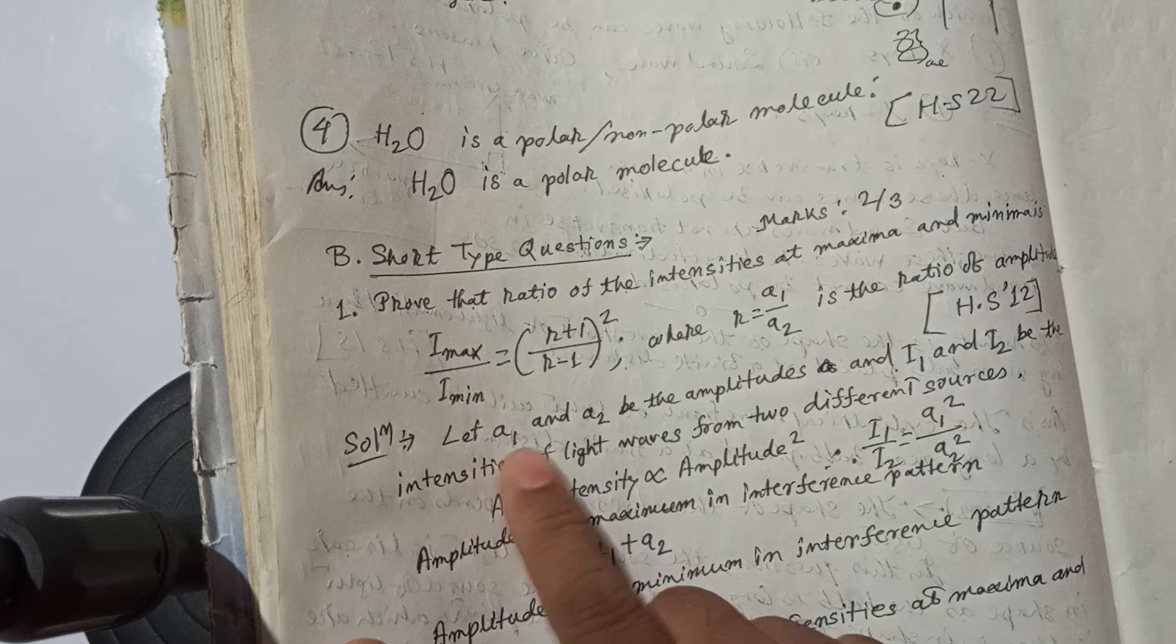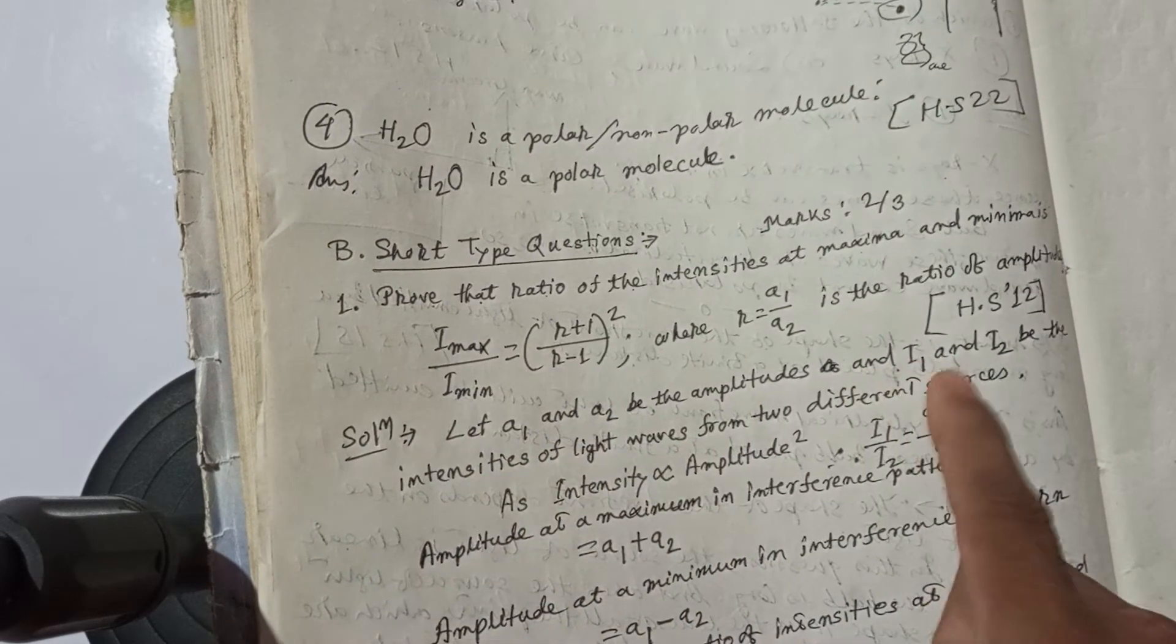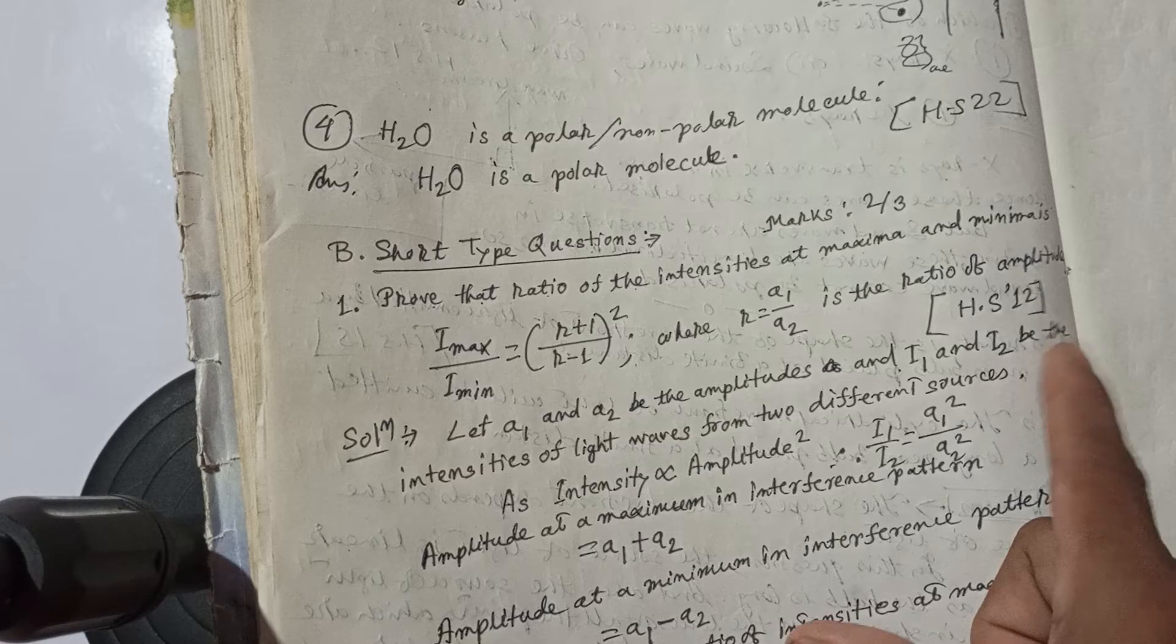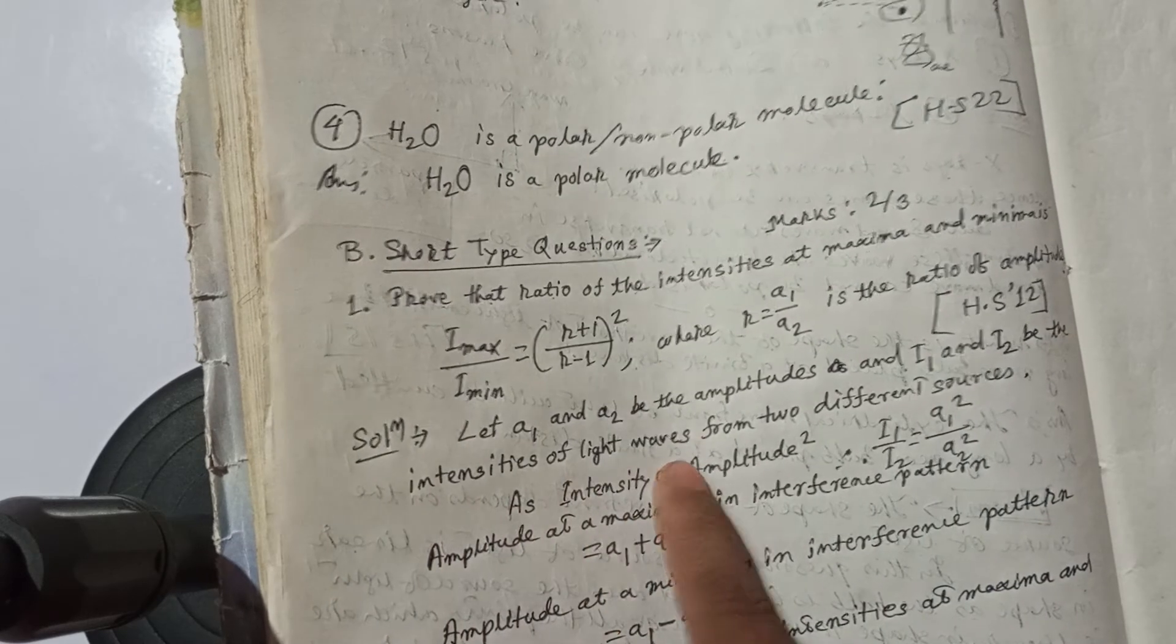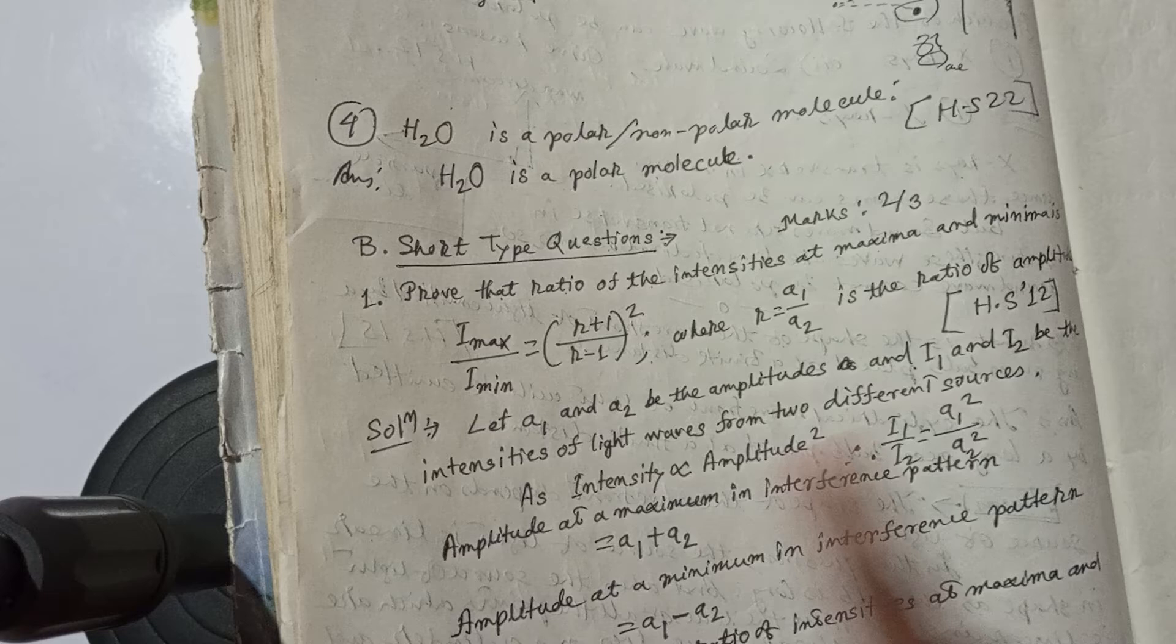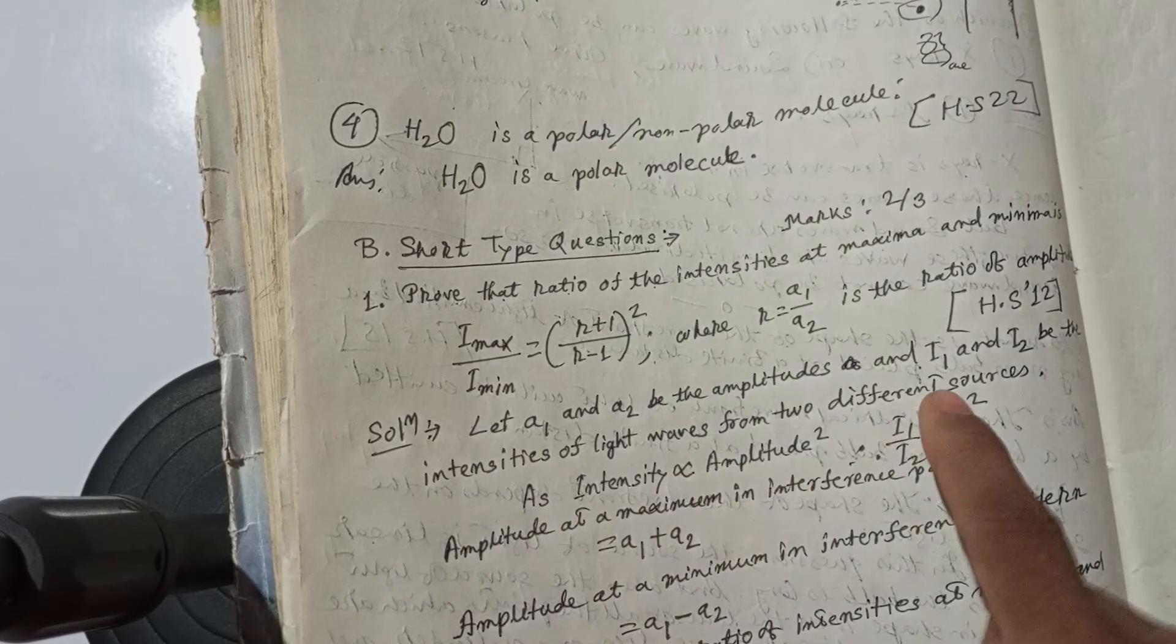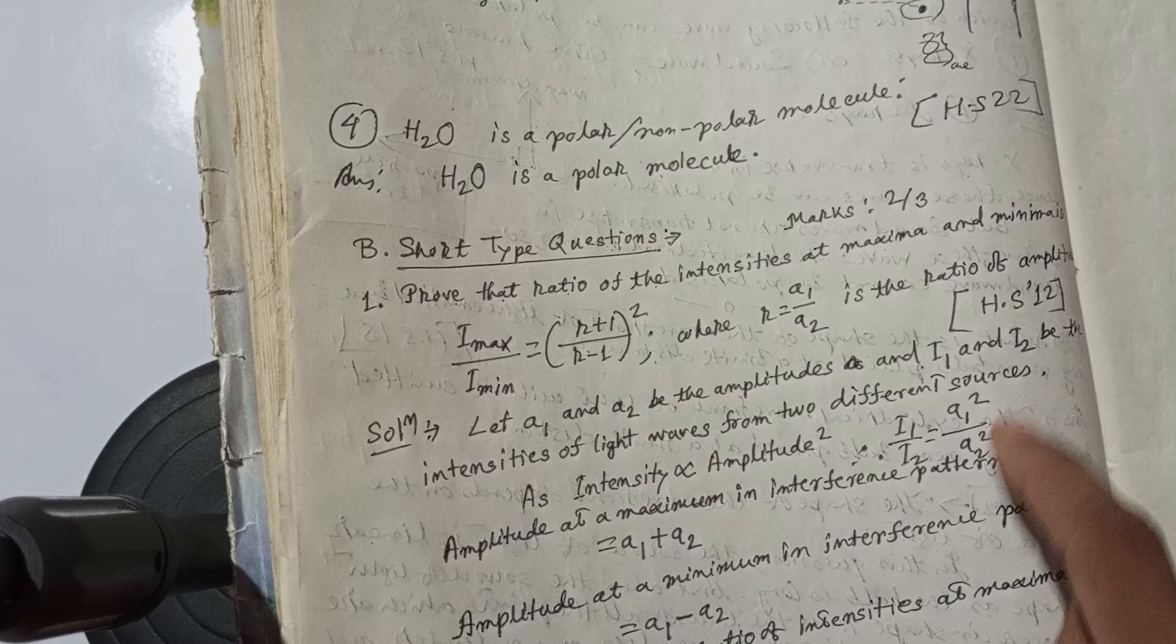Let A1 and A2 be the amplitudes and I1 and I2 be the intensities of light waves from two different sources. As intensity is proportional to amplitude squared, therefore I1 by I2 equals A1 square by A2 square.